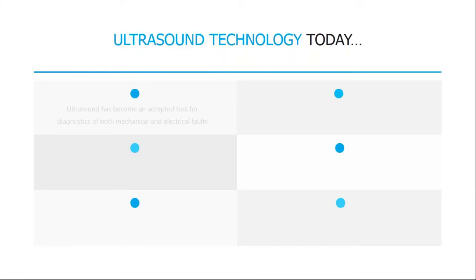Ultrasound is considered one of the most versatile CBM tools in the marketplace, and the Ultra Probe 15,000 is certainly a diagnostic tool for many applications. Ultrasound has become accepted as a diagnostic tool for both mechanical and electrical faults. It's not solely about the decibel level — we can record the sound of what we're hearing, play that sound file back, and diagnose exactly what the fault is, whether electrical or mechanical.